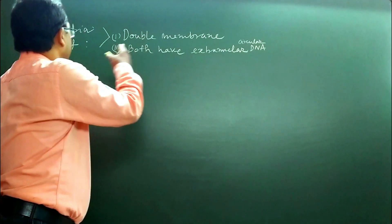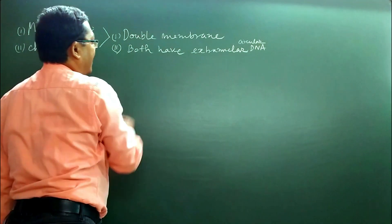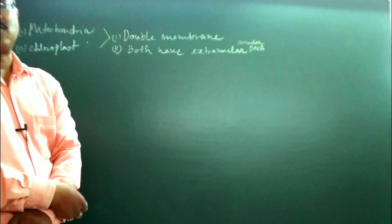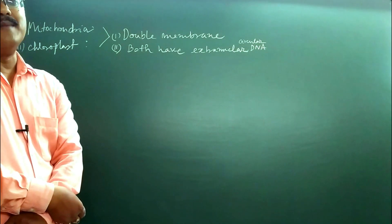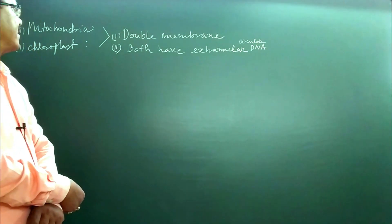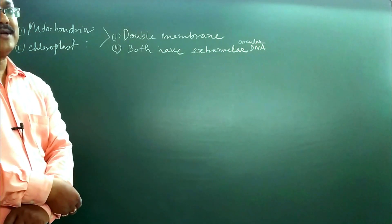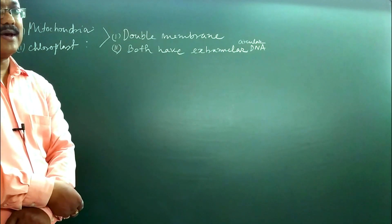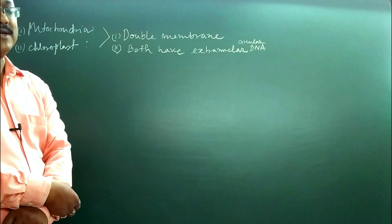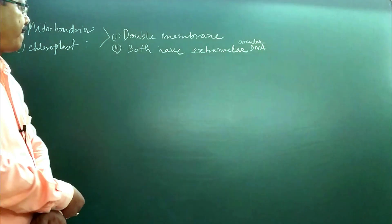In the case of plastids, this is called plastid DNA, and in the case of mitochondria, it is called mitochondrial DNA. Both organelles contain some extra-nuclear DNA.